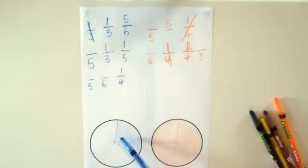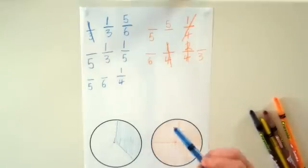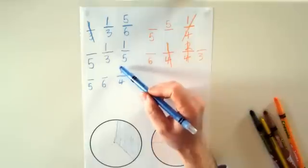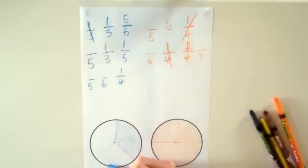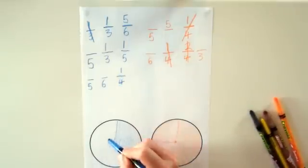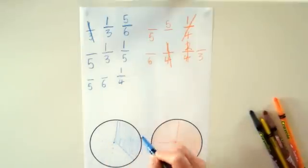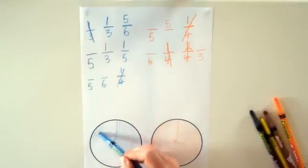In this game, blue was using thirds and orange was using quarters. But they can mix up fractions when they're playing the game. So for example, if blue had a quarter they could use, they could divide their shape up into quarters and then colour in a whole quarter.